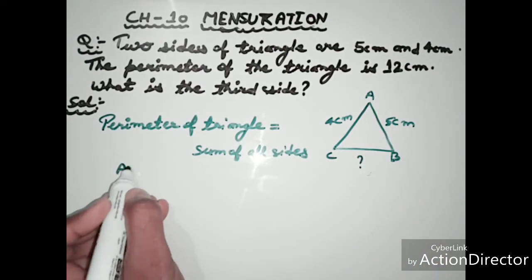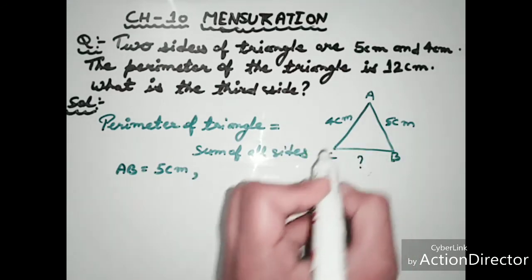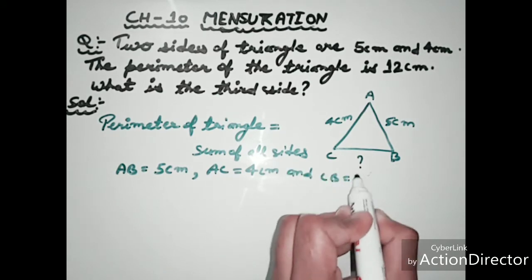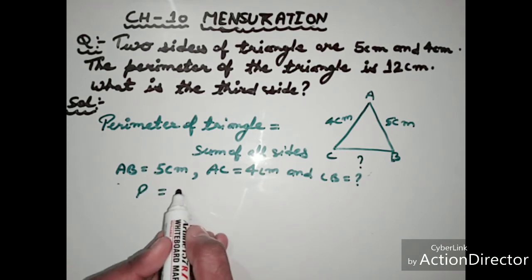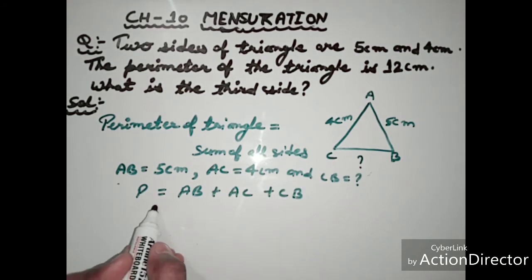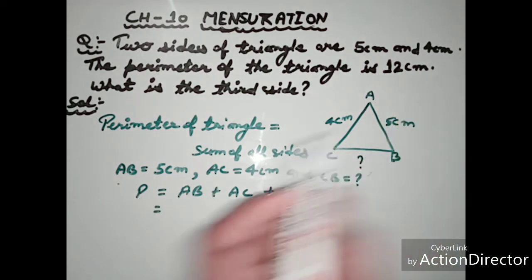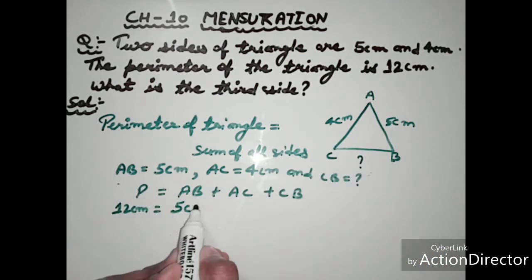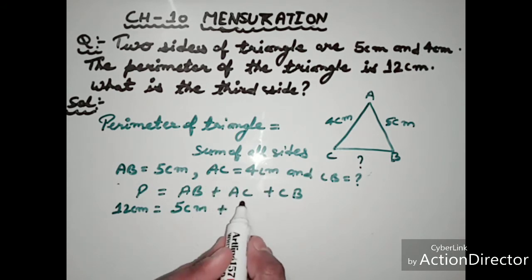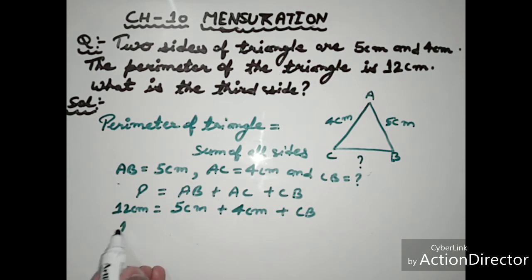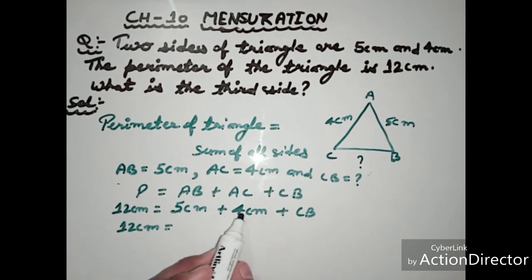We need to find CB. The perimeter of a triangle equals the sum of all sides: AB + AC + CB. So, 12 centimeters equals AB (5 cm) plus AC (4 cm) plus CB. That gives us 12 centimeters equals 9 centimeters plus CB.